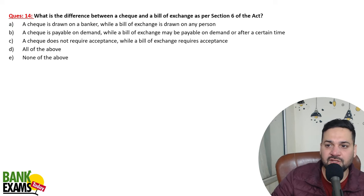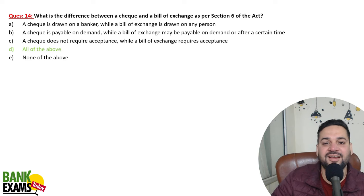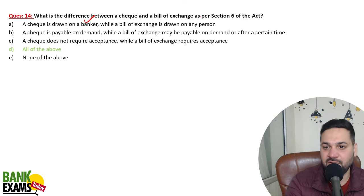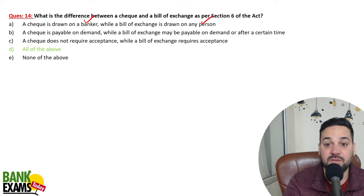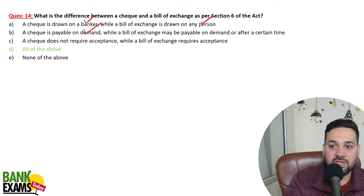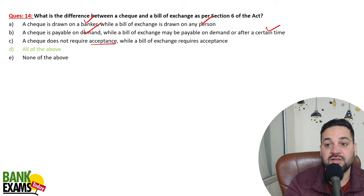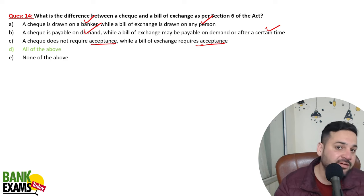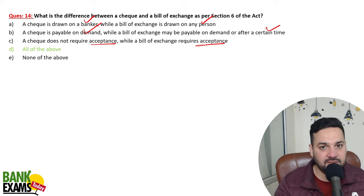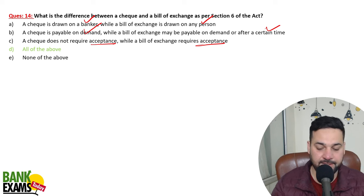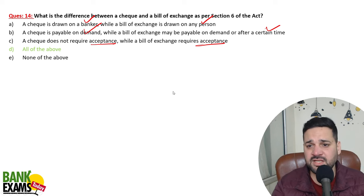What is the difference between a cheque and a bill of exchange? A cheque is drawn on a banker, while a bill of exchange can be drawn on any person. A cheque is payable on demand; a bill of exchange may be payable on demand or after a certain time. A cheque does not require acceptance, while a bill of exchange requires acceptance before payment.